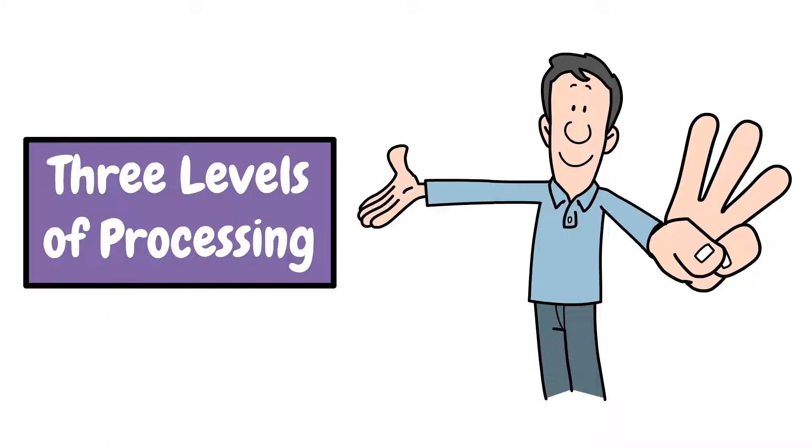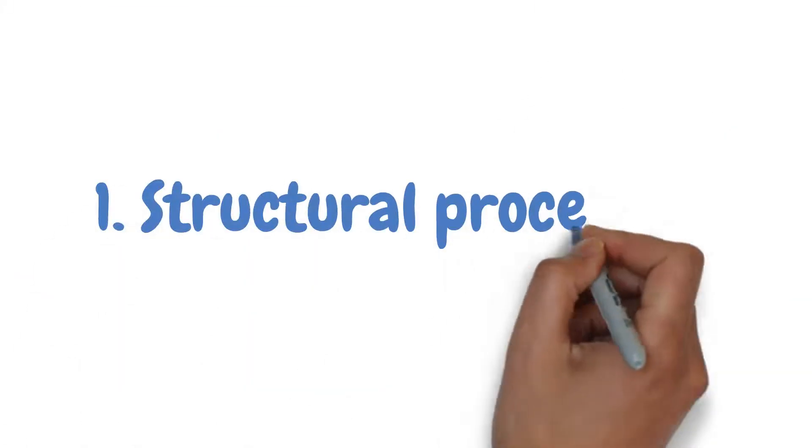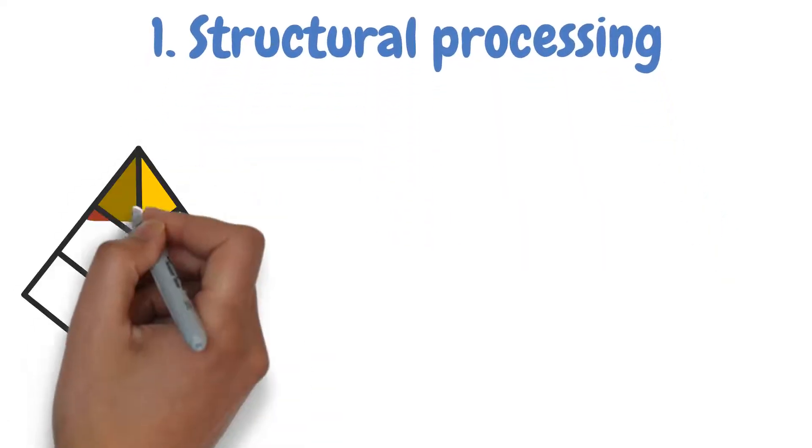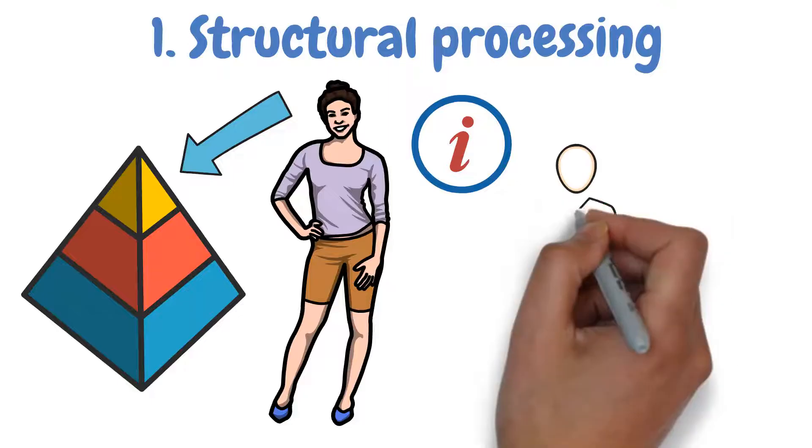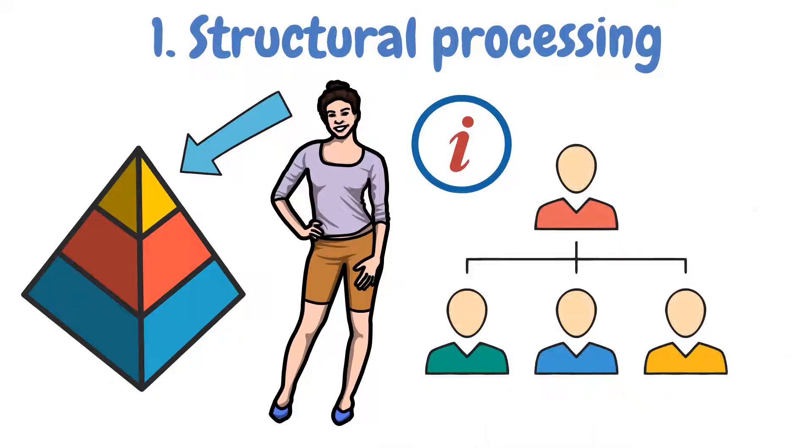The theory proposes three levels of processing. The first level of processing is structural processing. This is the shallowest level, focusing on the physical appearance or what it looks like aspect of information. When we use structural processing, we remember information based on its visual characteristics.